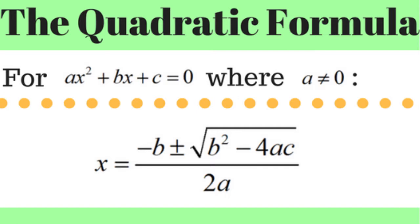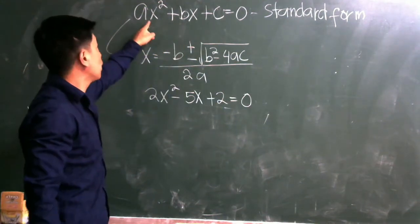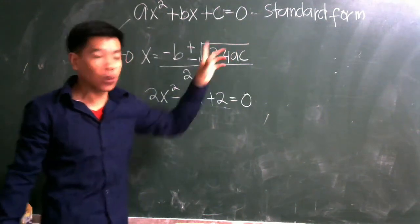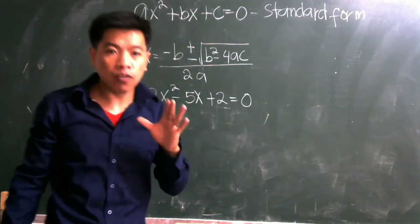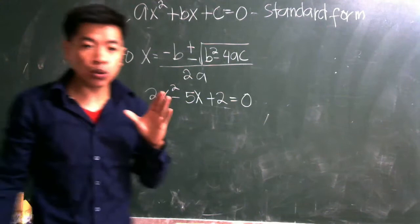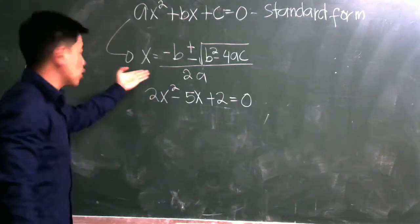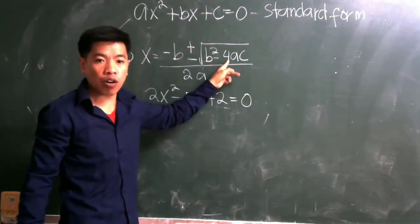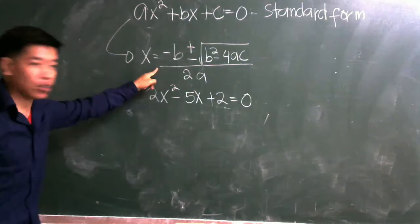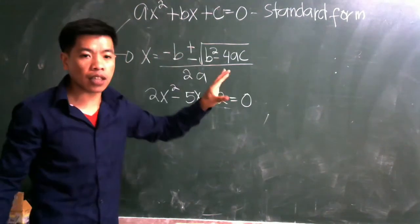We will now use the quadratic formula to solve for the roots of a quadratic equation — the values of x that satisfy the equation. The standard form is ax² + bx + c = 0, and the quadratic formula is x equals negative b plus or minus the square root of b² minus 4ac, all over 2a.